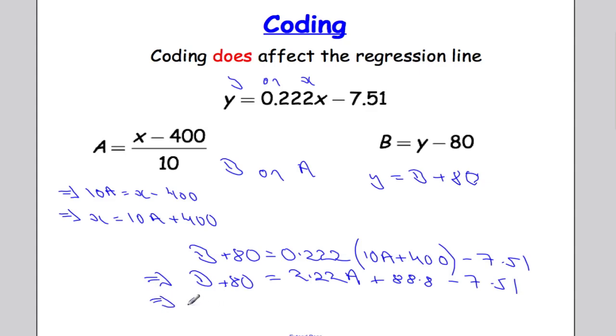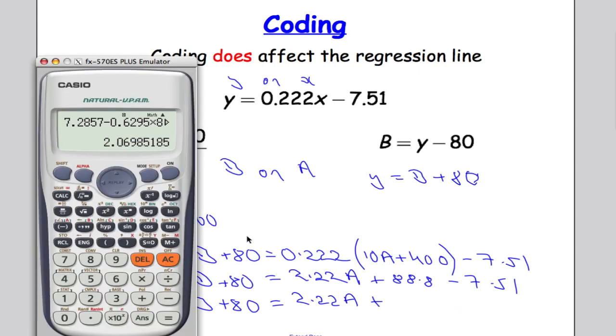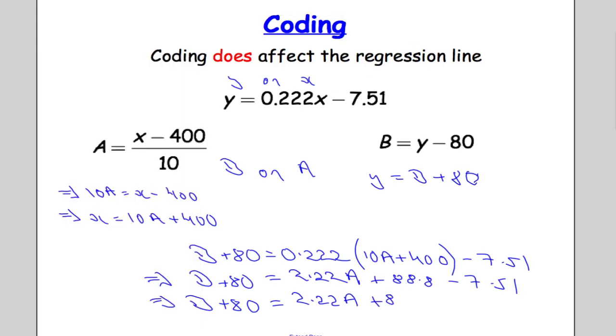That implies that b plus 80 equals 2.22a plus. Now I'm going to use my calculator for this because I don't want to make a mess right at this point. 88.8 minus 7.51 gives us 81.29. And then subtracting 80 from both sides we get b in terms of a.